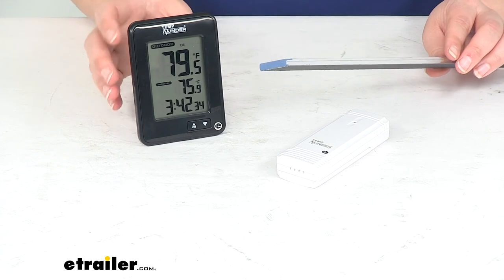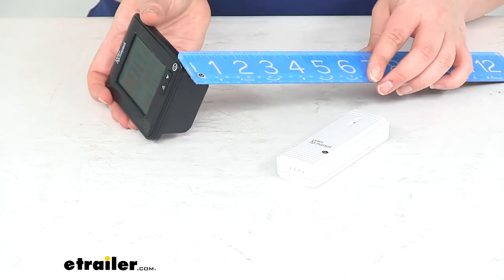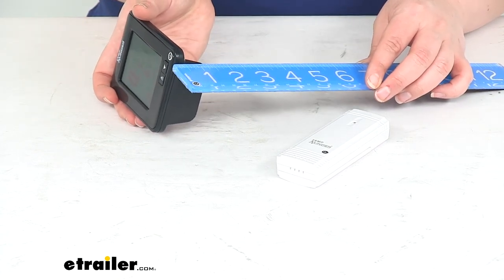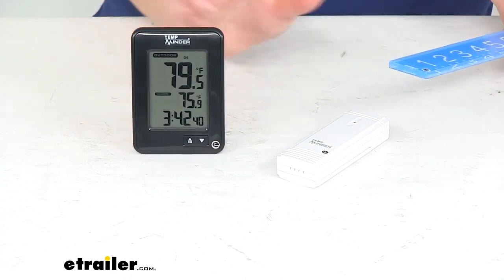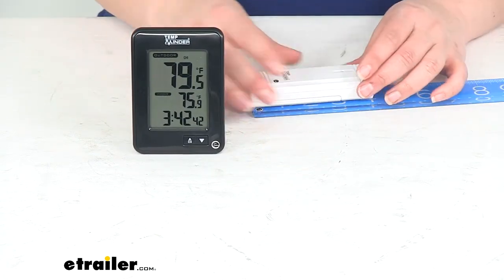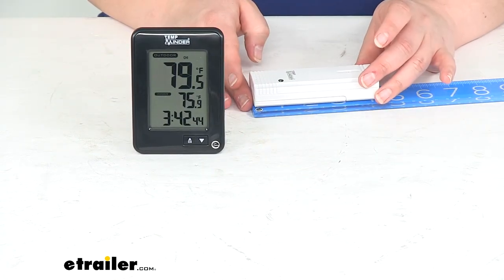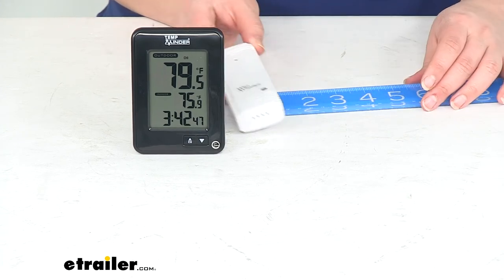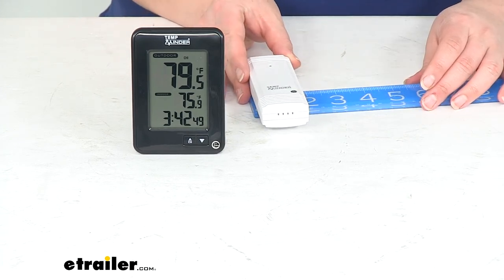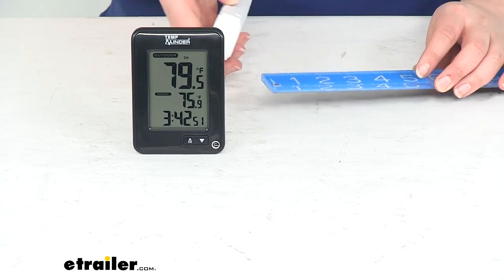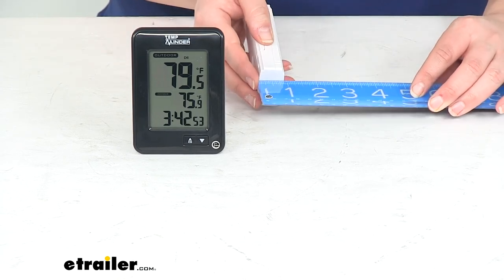It does lean back a little bit so it might be slightly shorter than that. With the stand it's about an inch and a half deep. The remote sensor measures about four and a quarter inches long by about an inch and five-eighths wide, and about seven-eighths of an inch thick.